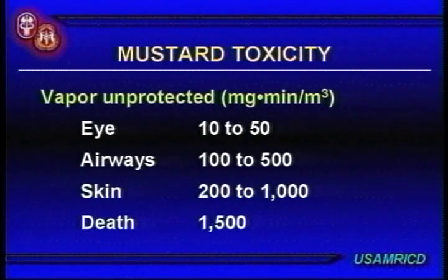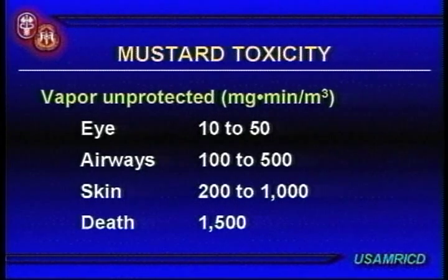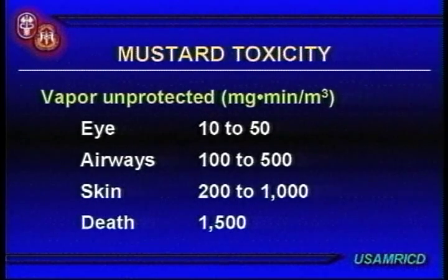Vapor or liquid mustard is primarily an epithelial phenomenon. The number one sensitive area is the surface of the eye — the cornea — followed by the airways (tracheal and bronchial epithelium), then the skin. But the thresholds are not that far apart. Your eye is the most sensitive, followed by the airways and then the skin.